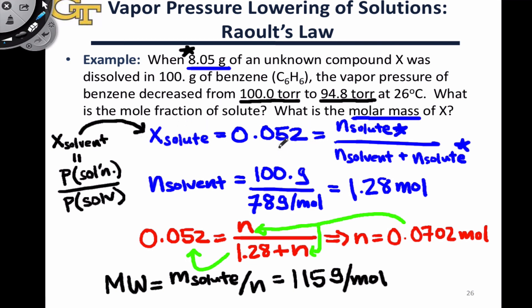We set that up using the definition of mole fraction to contain one unknown variable — specifically the moles of solute — plugged in the moles of solvent calculated from the setup of the problem, solved for the moles of solute, and then used the ratio of the mass of solute given to the moles of solute to give us 115 grams per mole, the molar mass of the solute.